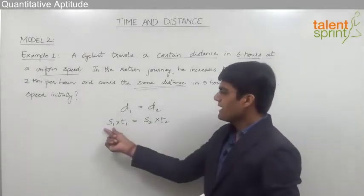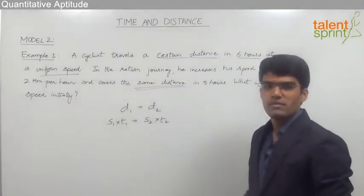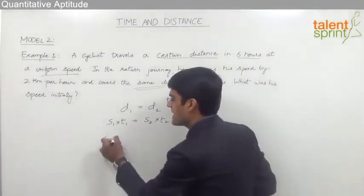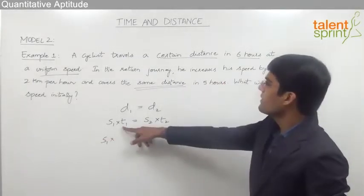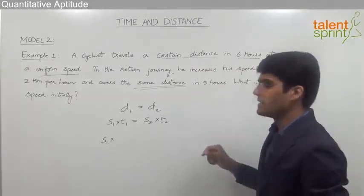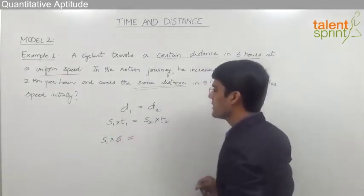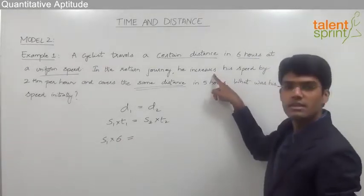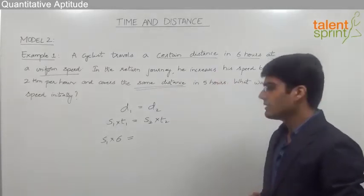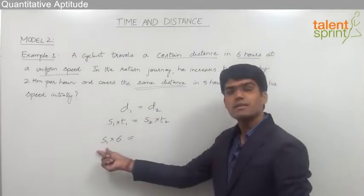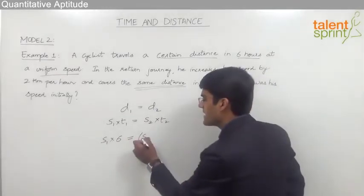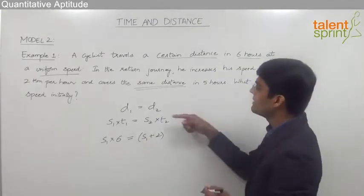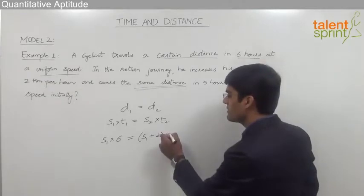We need to find out the value of s1, the initial speed. Substituting the values: s1 is s1 as it is. The distance was covered in six hours in the first case, so t1 is six hours. In the return journey, the speed was increased by two kilometers per hour, so s2 equals s1 plus 2. The distance was covered in five hours, so t2 is five.